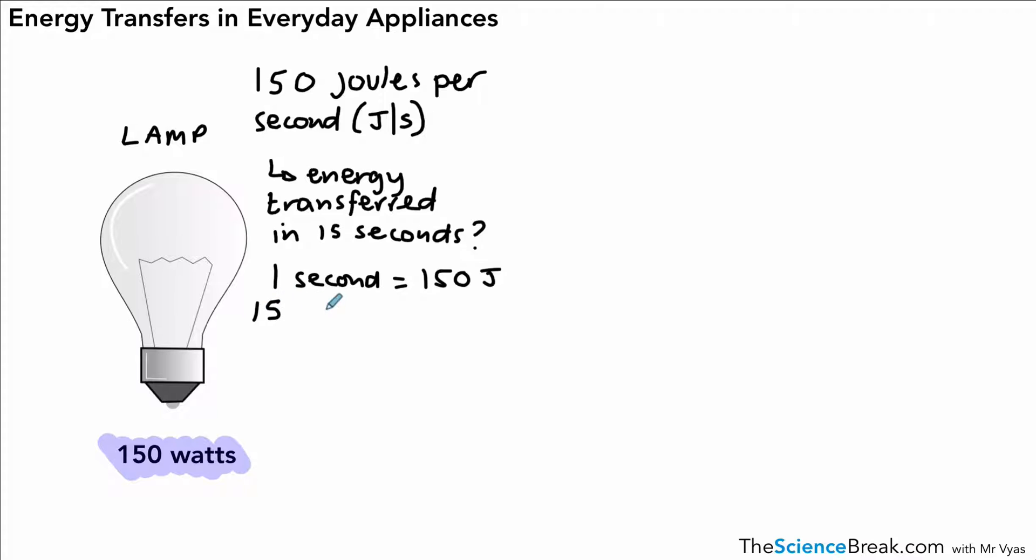Well, if we know in one second we transfer 150 joules, in 15 seconds it's just a case of 150 times 15, or the other way around as I've written there. And if we work that out, we have an answer of, let's put that in the calculator quick, 15 times 150 joules, 2,250 joules. If you wanted, you could write that as kilojoules. That would be 2.25 kilojoules.